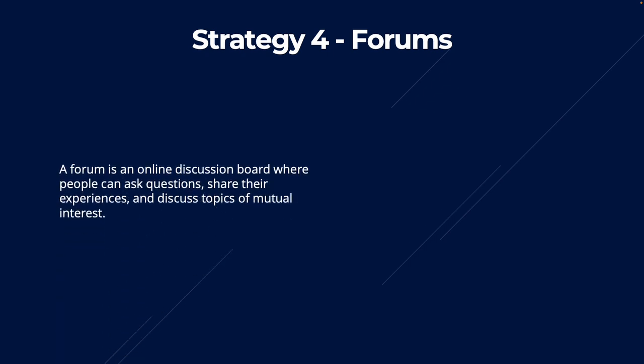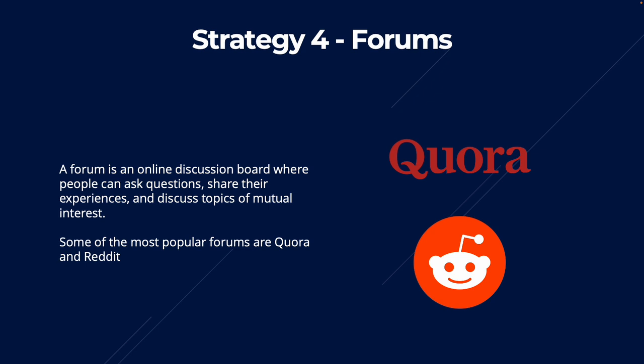Strategy number four: forums. Forums are pretty much an online discussion board where people can ask questions, share their experiences, and discuss topics of mutual interest. You can use targeted forums to generate affiliate marketing sales by finding forums related to the products or services that you want to be an affiliate for. Some of the most popular forums out there are Quora and Reddit — and there are lots more, especially when you start to niche down on a specific topic.